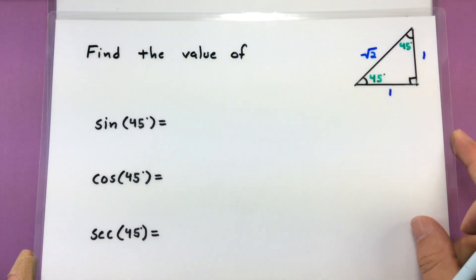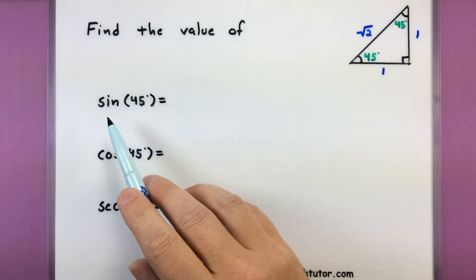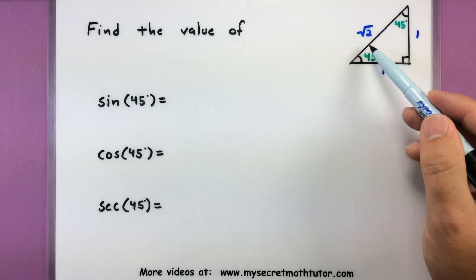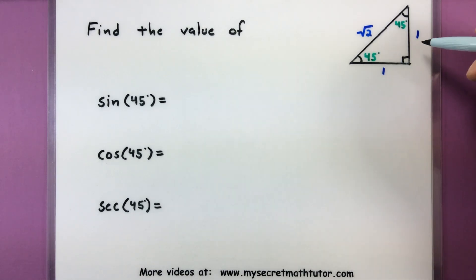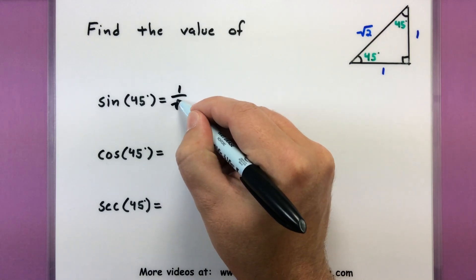Let's do this again with our 45-45-90 triangle and get some more good key values. For the first one we want to do sine of 45 degrees. So I could do 45 in the bottom left here, and that would be the opposite over hypotenuse, or 1 over the square root of 2.